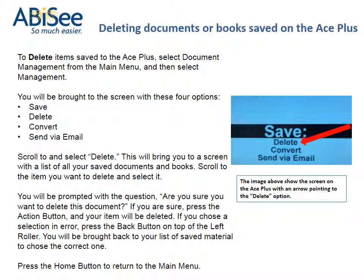Deleting documents or books saved on the ACE+. To delete items, select Document Management from the main menu, and then select Management. Scroll to and select Delete. This will bring you to a screen with a list of all your saved documents and books. Scroll to the item you want to delete and select it. You will be prompted with the question: Are you sure you want to delete this document? If you are sure, press the action button and your item will be deleted. If you chose a selection in error, press the back button to return to your list of saved material. Press the Home button to return to the main menu.